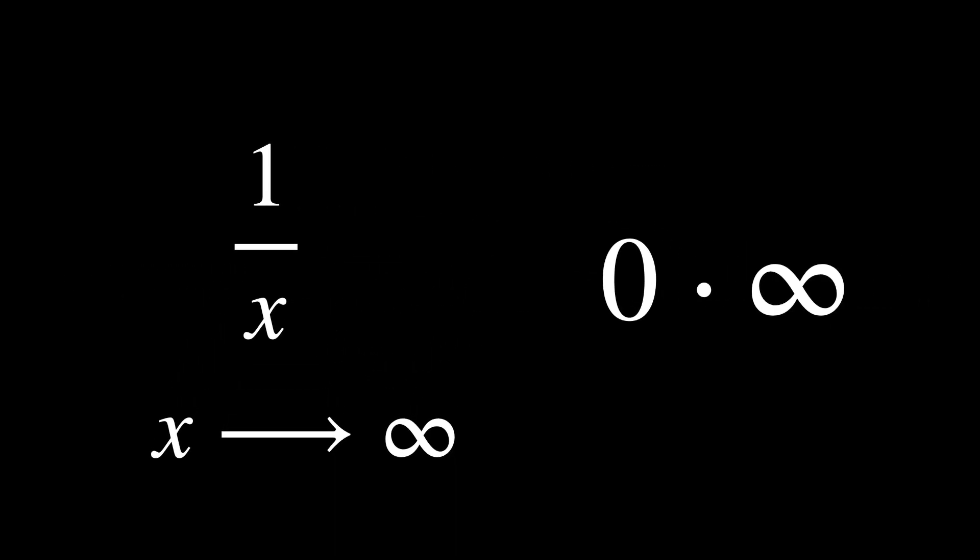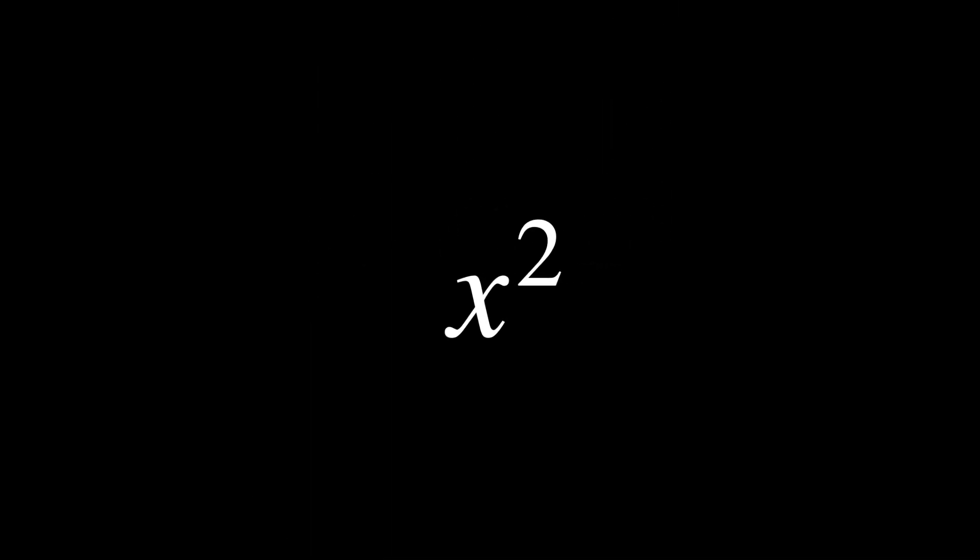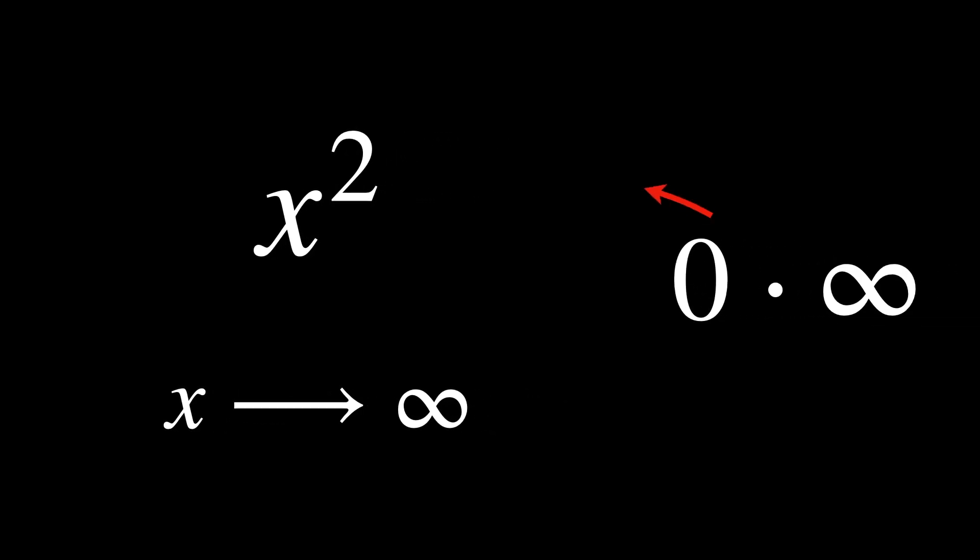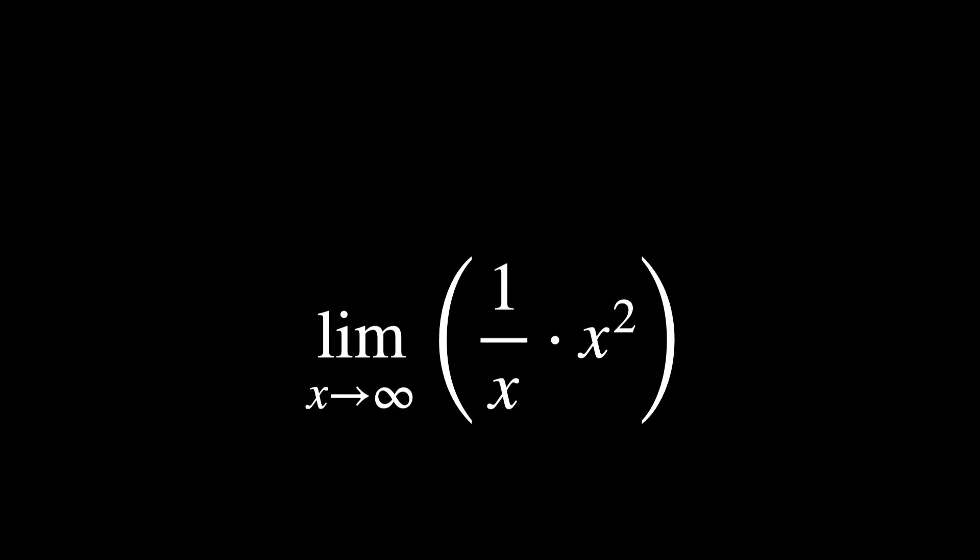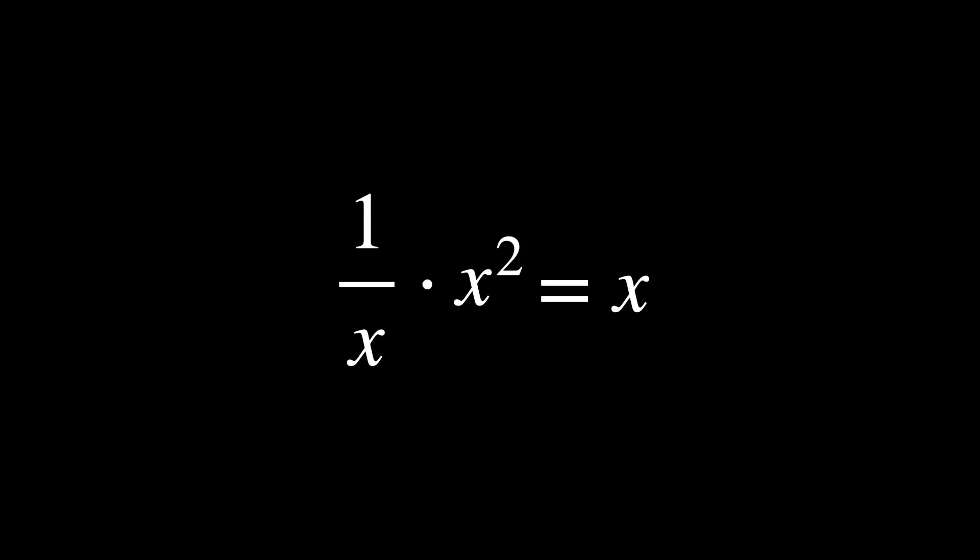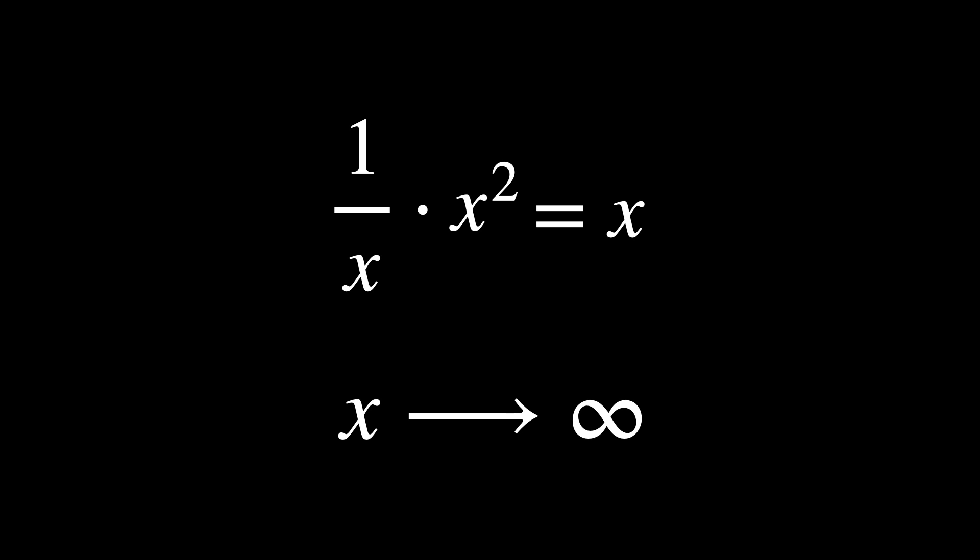Consider this limit. The fraction 1 over x approaches 0 as x tends to infinity. This term represents the 0 in 0 times infinity. x squared grows towards infinity as x goes to infinity. Here, despite the 0 factor and the infinity factor, the result is an infinite limit. This example shows that the 0 factor doesn't necessarily win over the infinite growth of the second factor, and it depends on how these rates of change balance out. But that isn't the case in other examples.